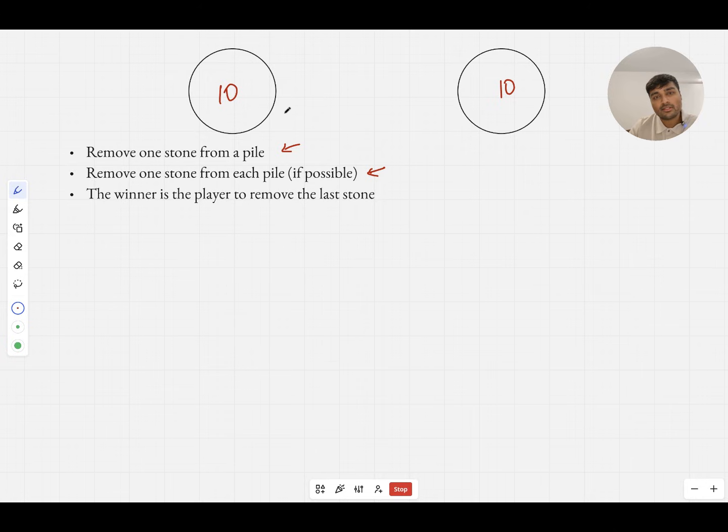And they go back and forth. Player A starts, then player B, then A, and then B, and so on. And the winner is the player to remove the last stone. So for example, we could start with 10-10, and then player A goes and they take one stone from this pile, and then player B goes and takes one stone from each pile, then player A goes and takes one stone from here or whatever, then B takes one stone from here, and then A decides to take one from each, and so on. And the game is won by the player who removes the last stone. And the question is, if both player A and player B play strategically, play optimally, who will win and what is the winning strategy?